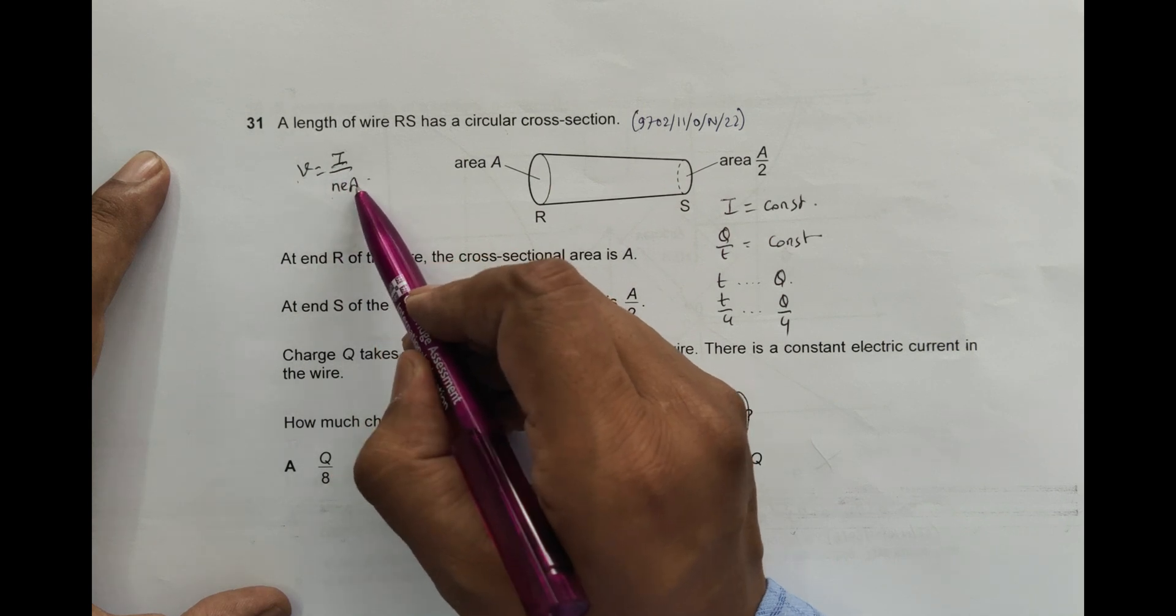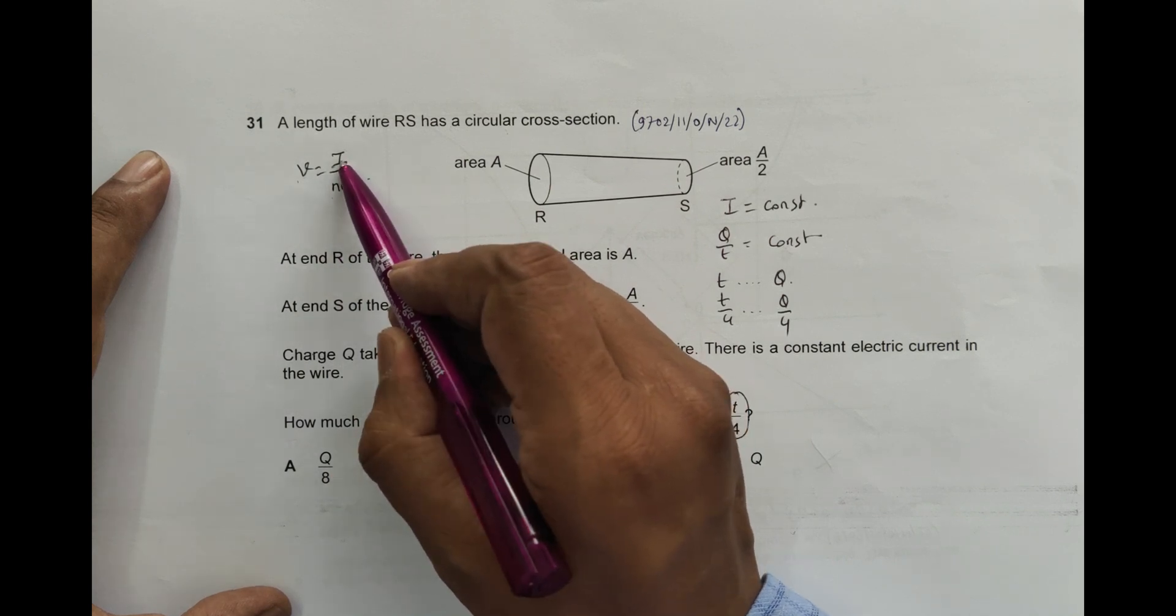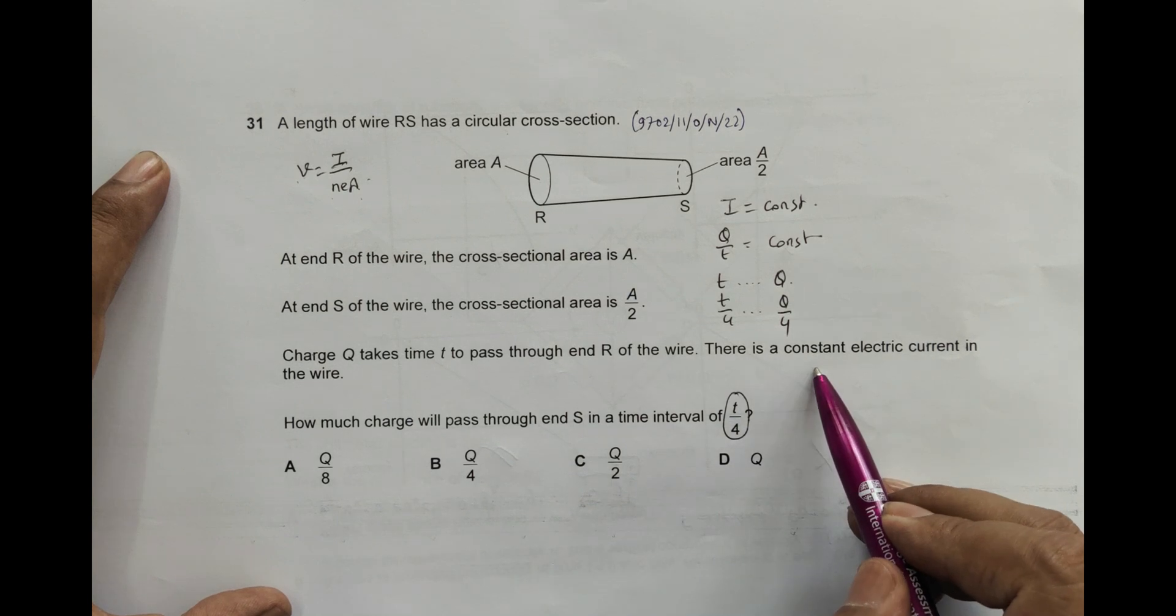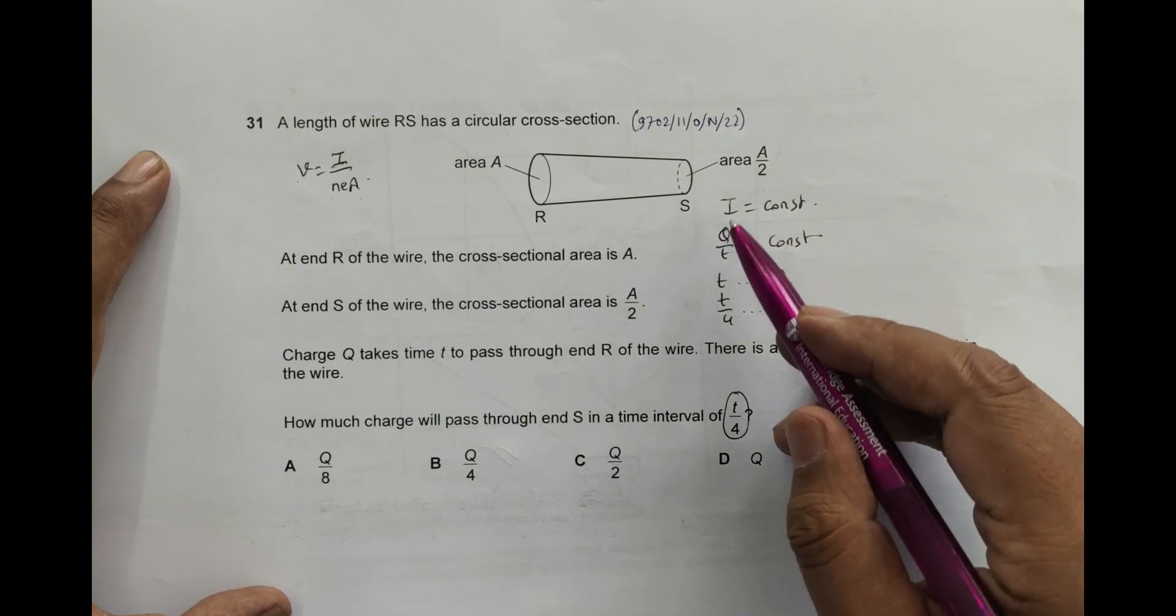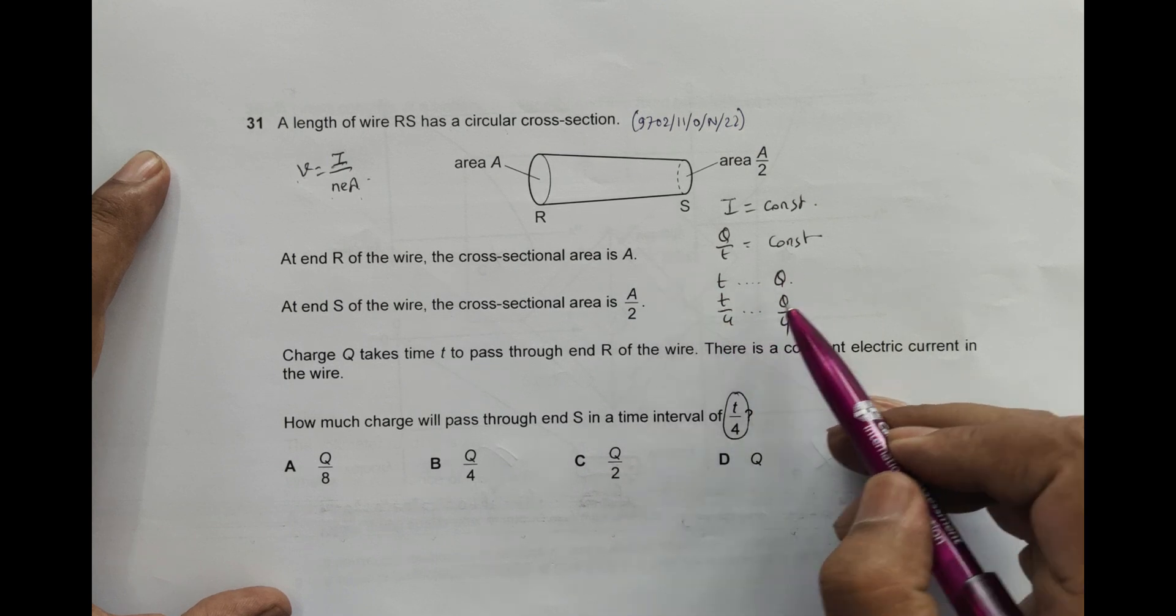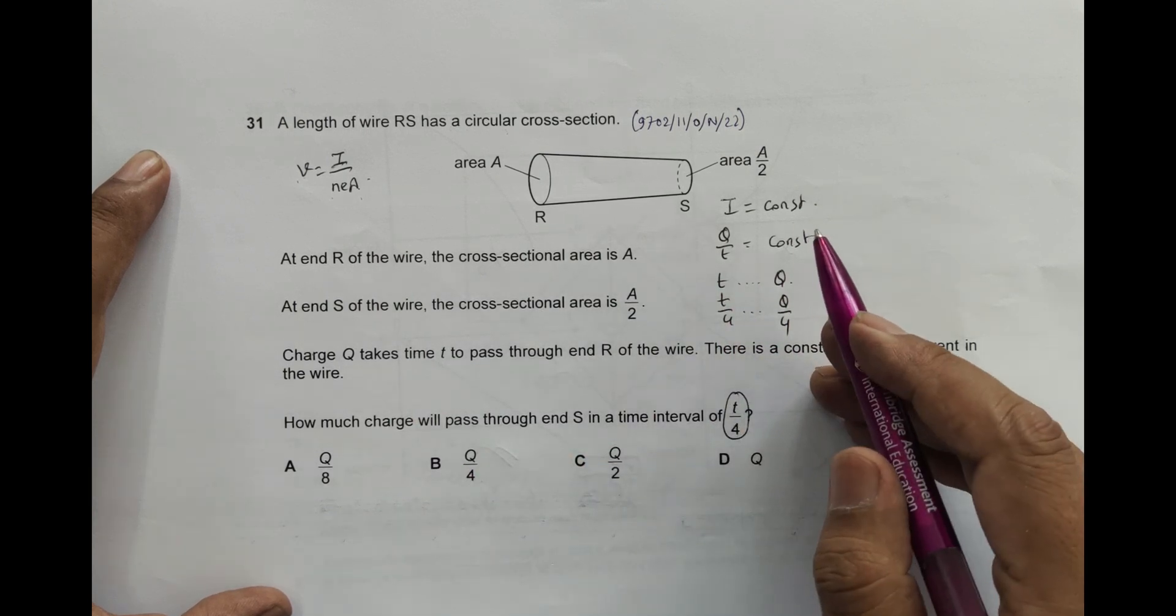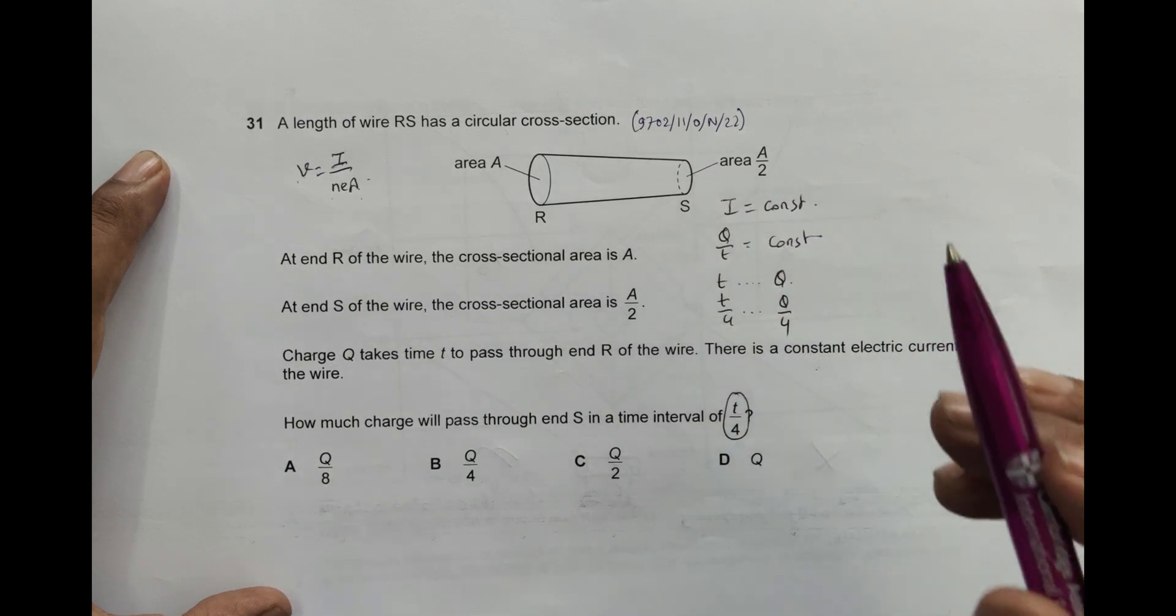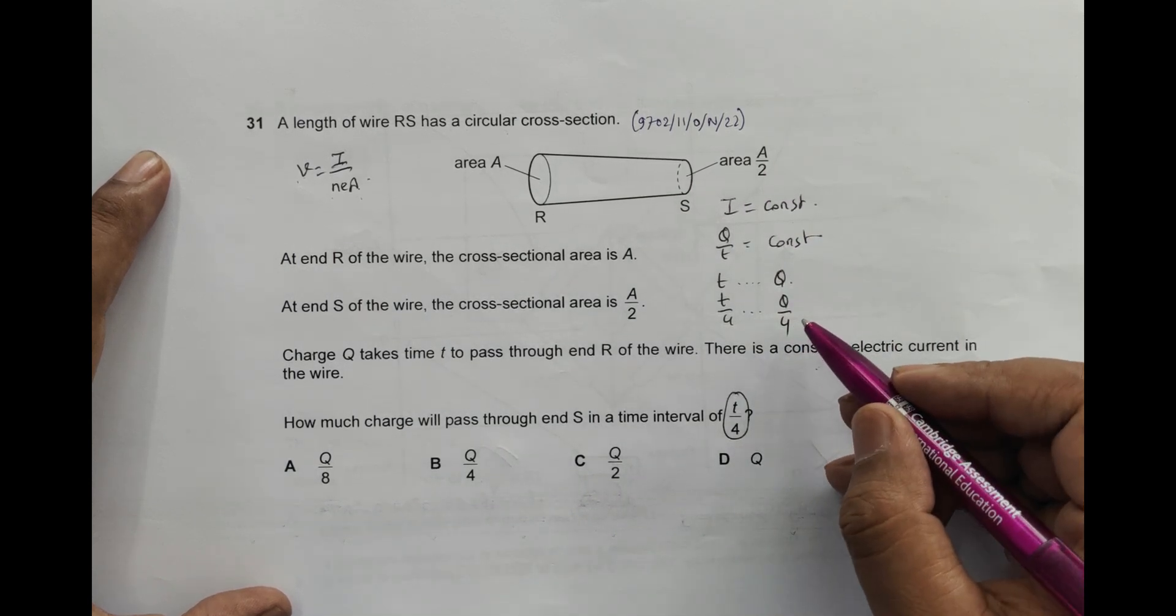So current is a constant thing. Current constant means Q by t is constant. At certain time Q is same, at t by 4, Q is equal to Q by 4 everywhere in the conductor without caring for the cross section.